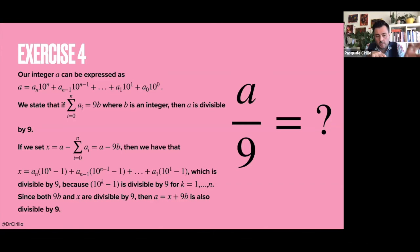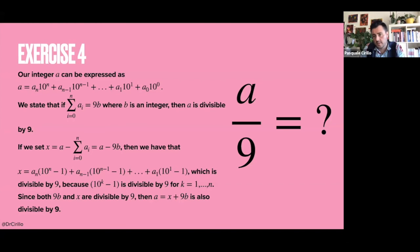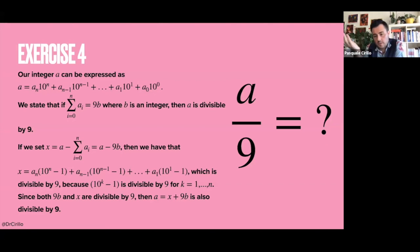If I have a quantity x that is divisible by 9, and a quantity 9b that is trivially divisible by 9 — because this is what I'm stating — and if I sum two quantities that are both divisible by 9, then their sum is divisible by 9. Since I can always write a equal to x plus 9 times b, and x is divisible by 9, and 9b is divisible by 9, their sum is divisible by 9. So we have proven that if I take an integer such that the sum of its digits is divisible by 9, then the integer itself is divisible by 9.